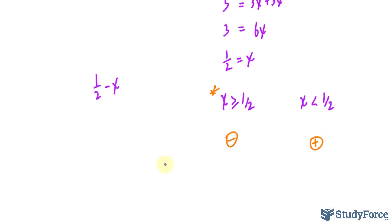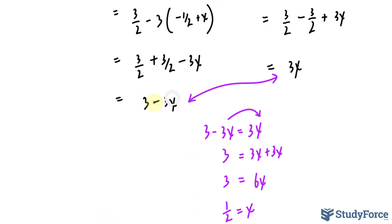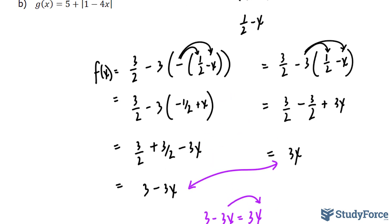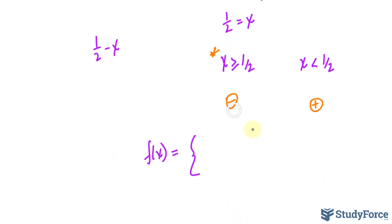Now we have everything we need to write our piecewise function. I'll write down f of x is equal to, and we had this when we had a negative in front of our expression. For the negative values, when x is greater or equal to half, and we'll put this at the bottom, that's for our negatives, we had 3 minus 3x.